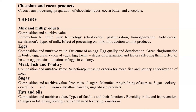Next, coming to chocolate — the main question I expect from this topic is the processing sequence of chocolate. There is tempering, fermentation, and multiple other processes. The sequence of chocolate preparation could be asked, as well as the tempering temperature, which gives chocolate its glossy look.